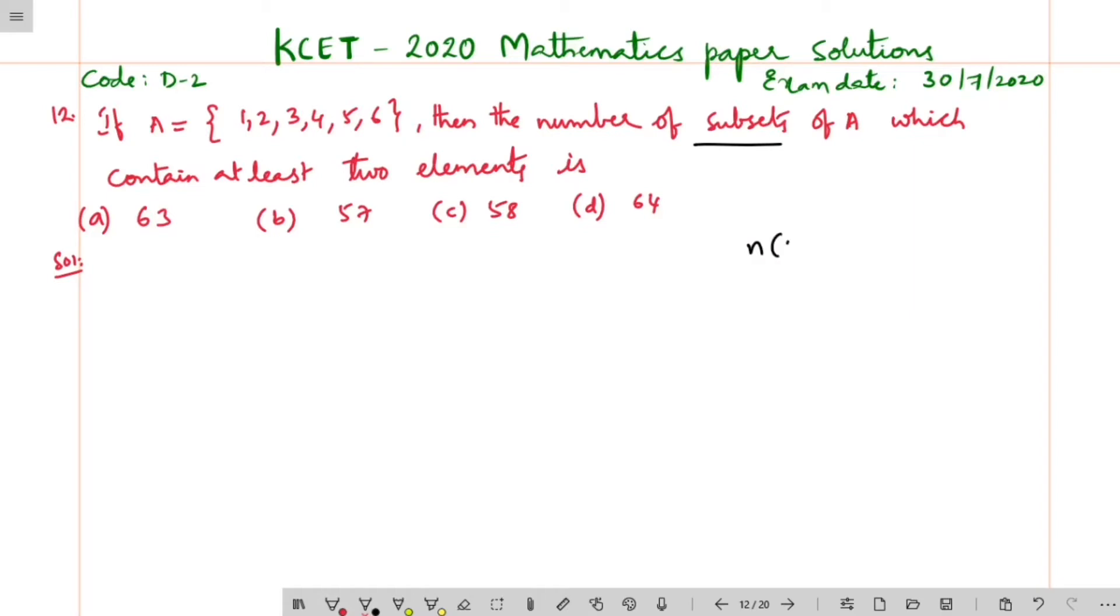If a set is containing some m elements, the number of subsets of A is equal to 2 to the power of m, right.